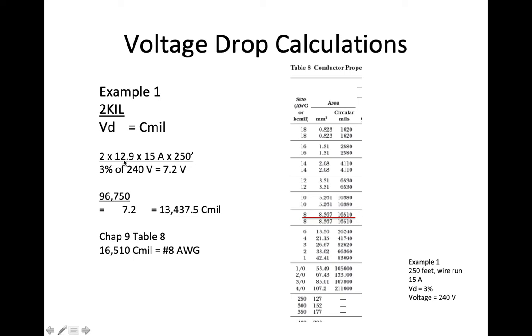If I have copper, my K constant is always 12.9. Now I'm entering in my current that I need. I need to get 15 amps over a far yonder distance of 250 feet away. I'm going to have 3% of 240 volts, which is 7.2 volts. So I multiply 2 times 12.9 times 15 times 250. That equals 96,750. The denominator is going to be 7.2. I divide 7.2 into 96,750, and it equals 13,437.5 Cmils.